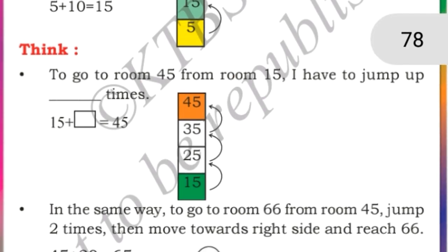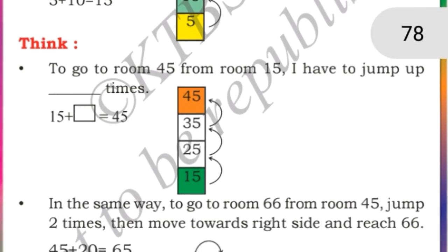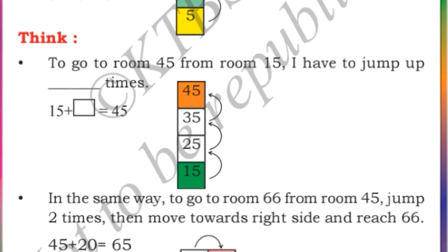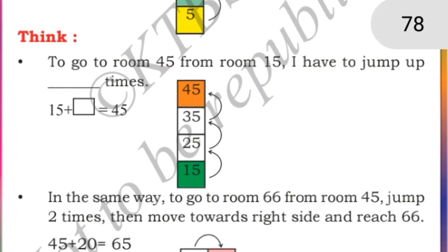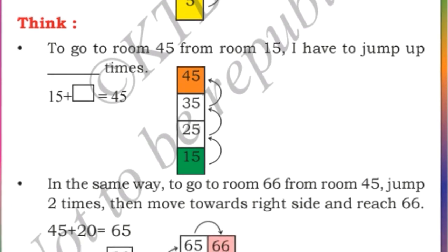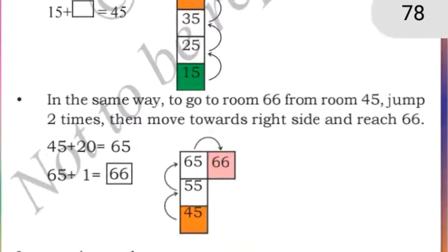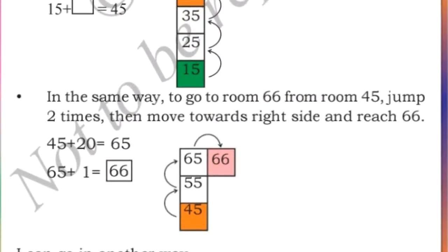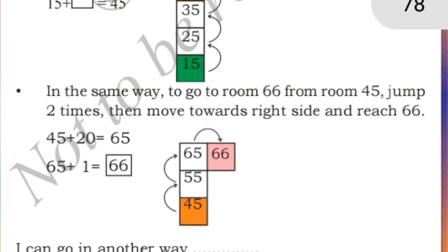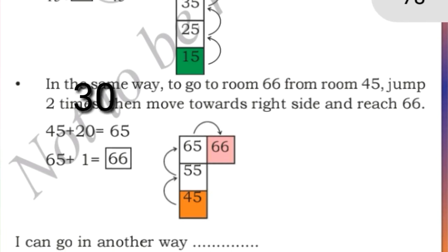Now think: to go to room 45 from room 15, Pinky has to jump how many times? From 15 to 25 is 10 times, 25 to 35 is 10 times — so 10 plus 10 is 20. From 35 to 45 again 10 times, so 30 times total. Here we will write 30.